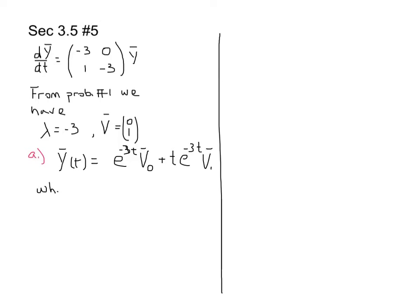The general solution has to include this part as well, where v1 is determined from v0 according to this rule: A minus lambda, so it's going to be A plus 3I times v0. Being specific, it's the matrix with entries 0, 0, 1, 0 times v0.